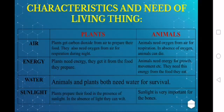Plants need oxygen from air for respiration. Animals also need oxygen from air for respiration; if they don't get oxygen, animals can die. For energy, plants need energy and get it from the food they prepare. Animals need energy for growth and movement, and they get this energy from the food they eat.